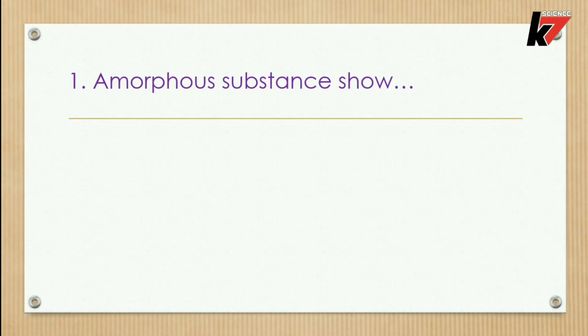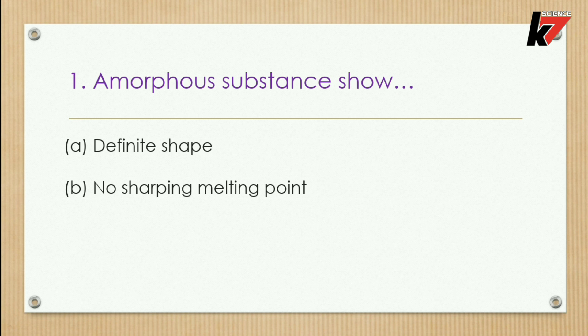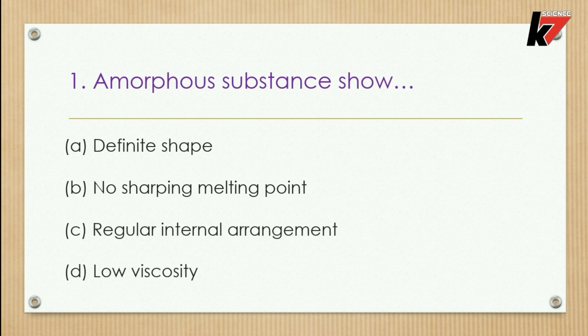Question 1: Amorphous substances show — options: definite shape, no sharp melting point, regular internal arrangement, or low viscosity. Amorphous substances have irregularity in their internal structure; they don't show definite shape, regular internal arrangement, or low viscosity, but they do show no sharp melting point. The second option is correct.